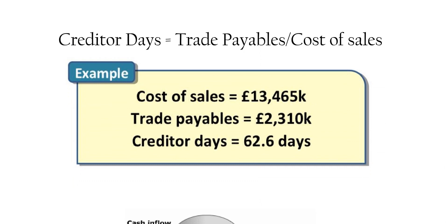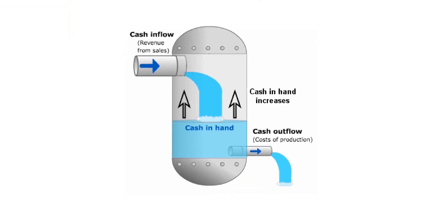Higher creditor days are good for you because they ease cash flow by delaying your outflows, helping you manage cash better. A key exam point is comparing debtor days and creditor days: if your debtor days are higher than your creditor days, you are not receiving inflows before making payments to suppliers, negatively impacting cash flow. You want your debtor days to be lower than your creditor days to support healthy cash flow.